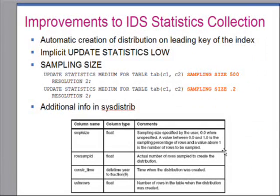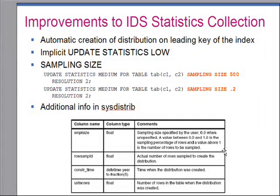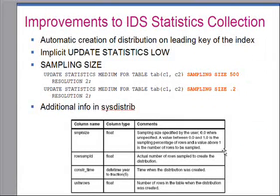You no longer need to run update statistics low after creating an index for the optimizer to consider the new index in subsequent optimization. The moment you create the index, the optimizer will start using it. One side effect is that any already-prepared statements will be invalidated and must be re-prepared before execution, because a new index has been introduced.